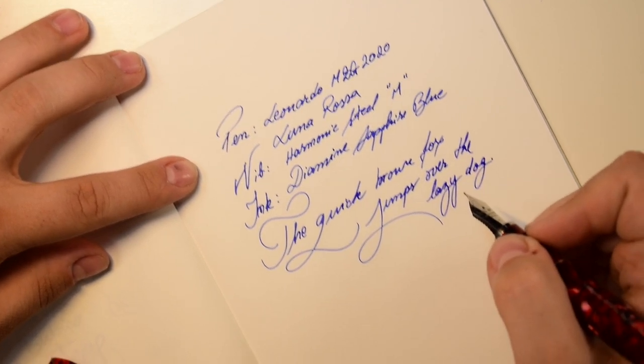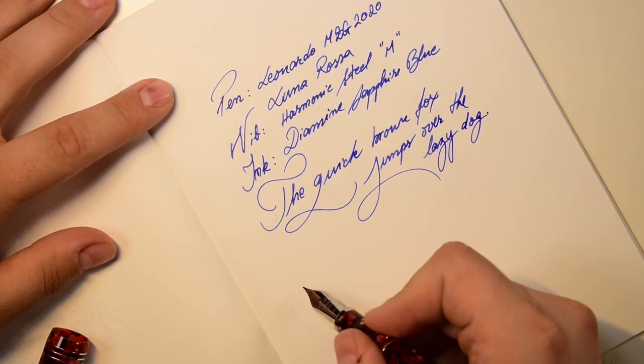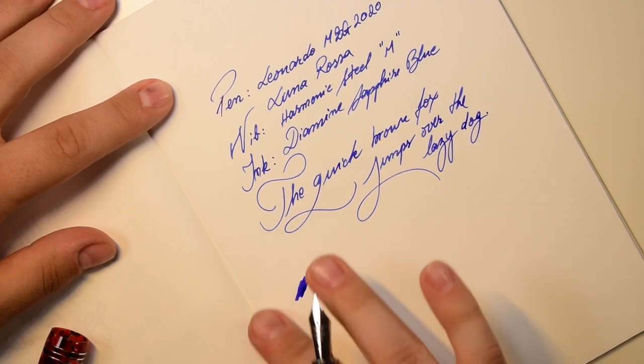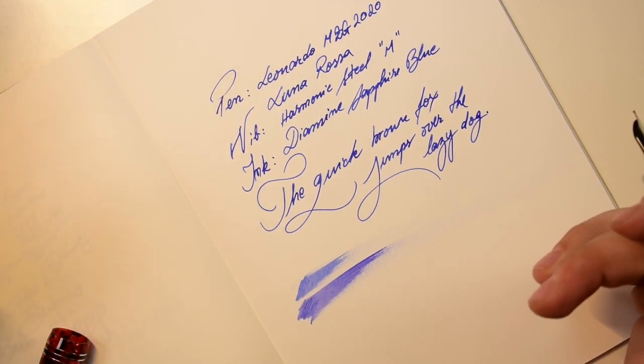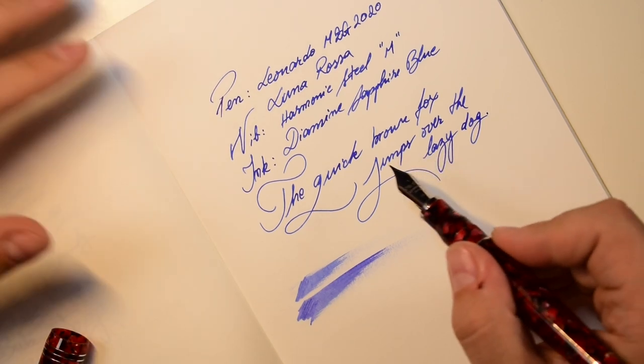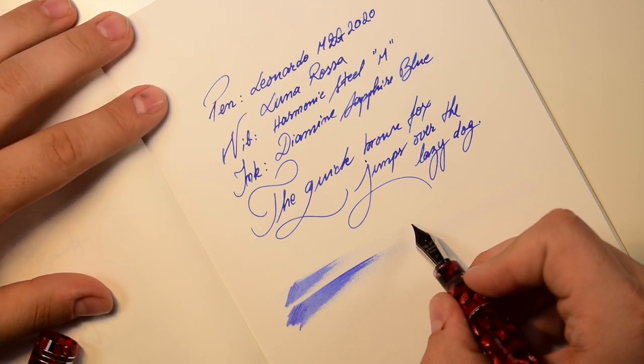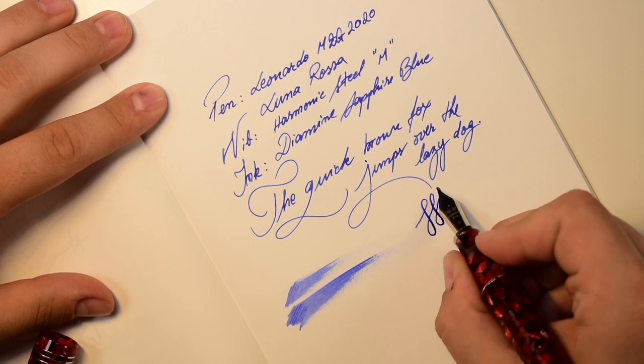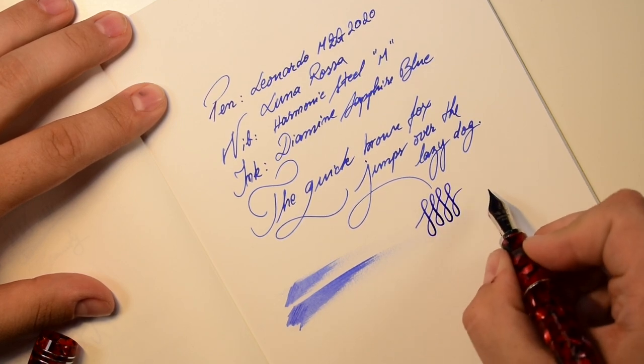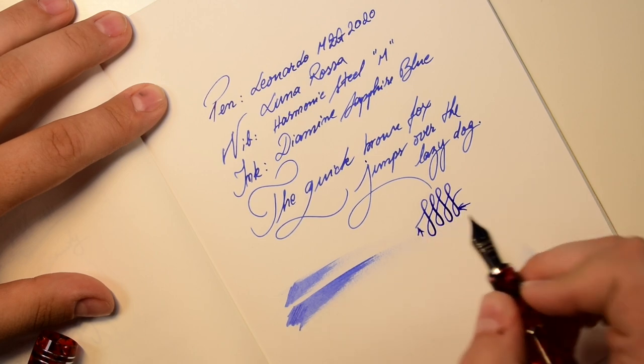As you can see, it writes like a dream. Now let's try a wetness test. This is one pass, fairly wet, I could say, and this is a double pass. I don't call it a gusher, but it's wet. Some of these nibs are offering a bit of flex, so let's try this. Not so much on this one, but there is a very small line variation.